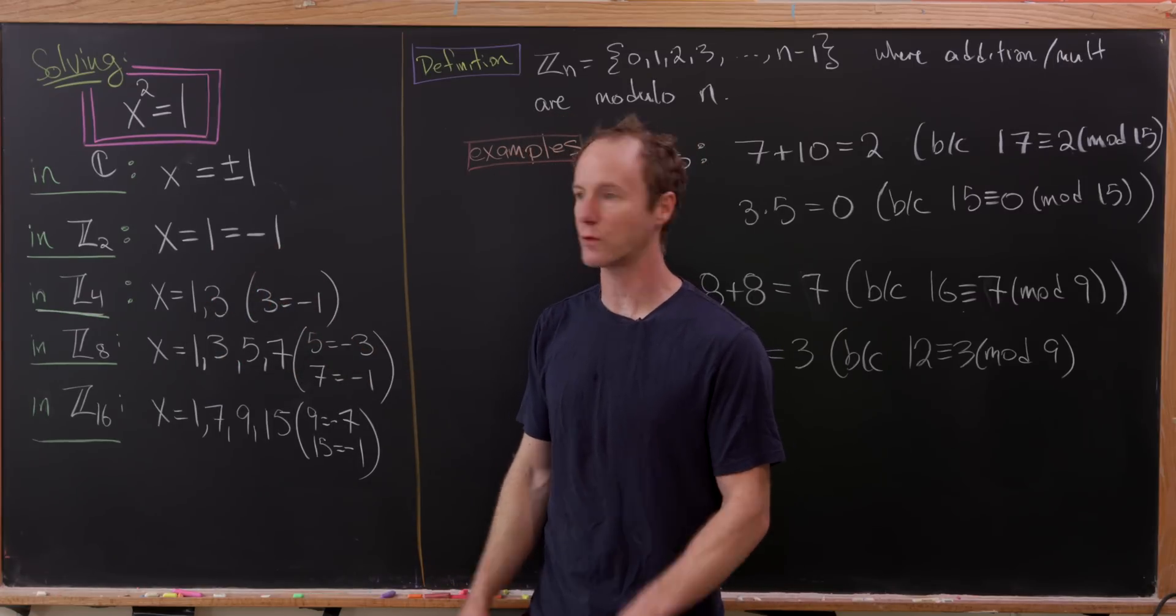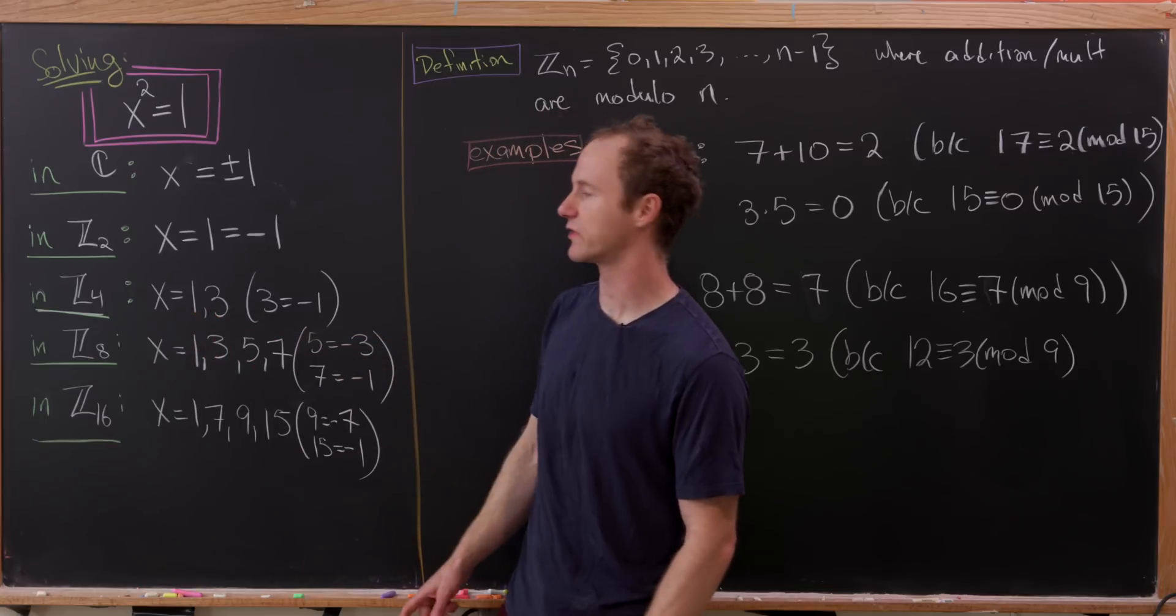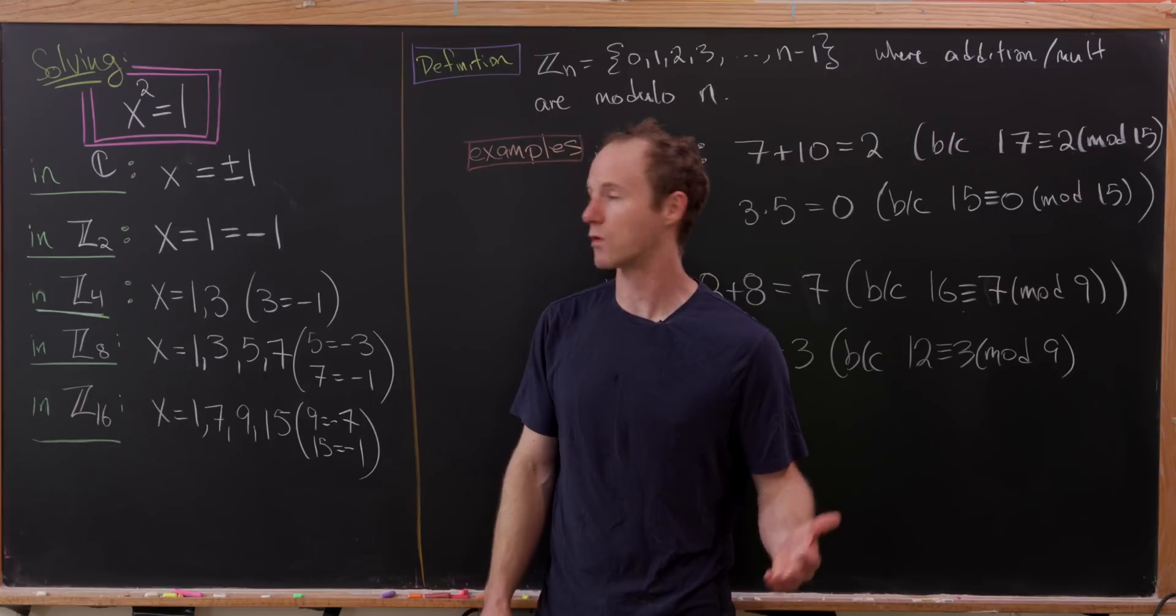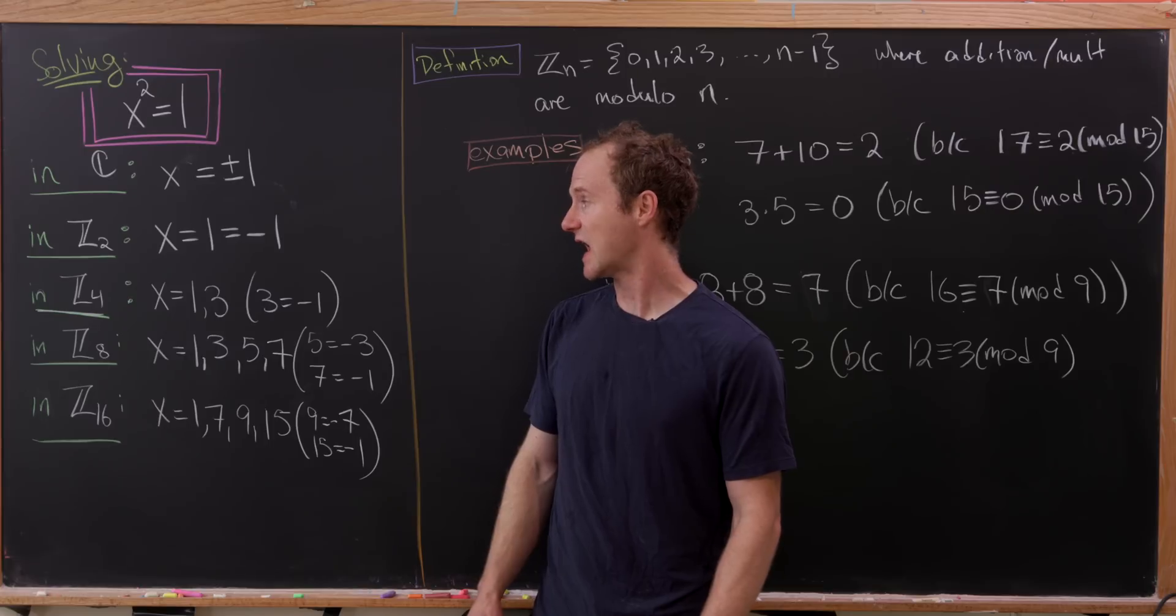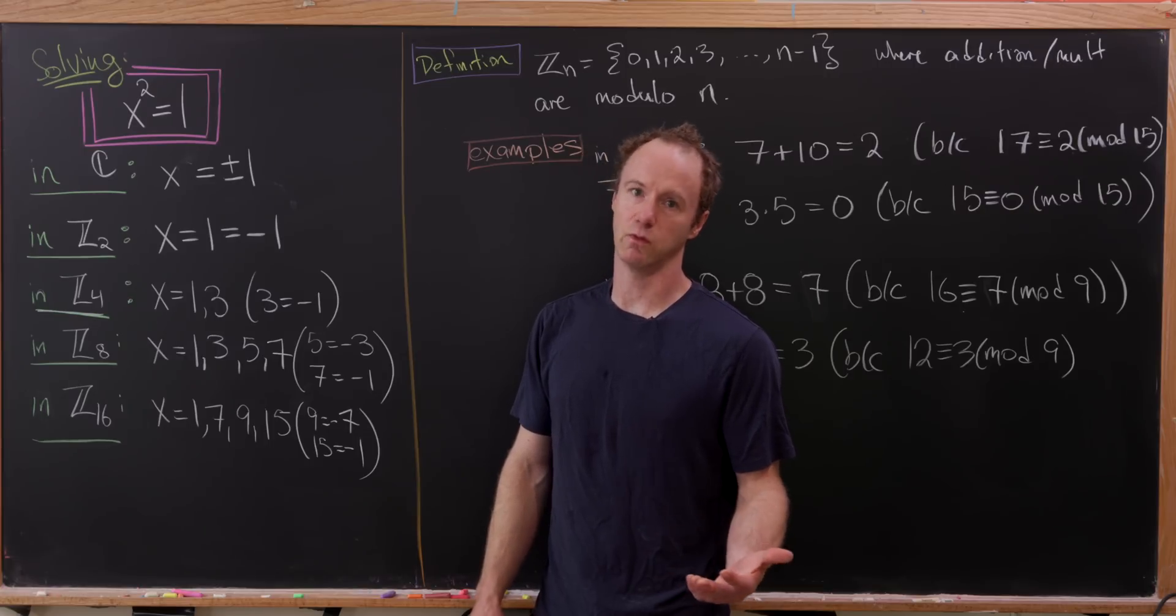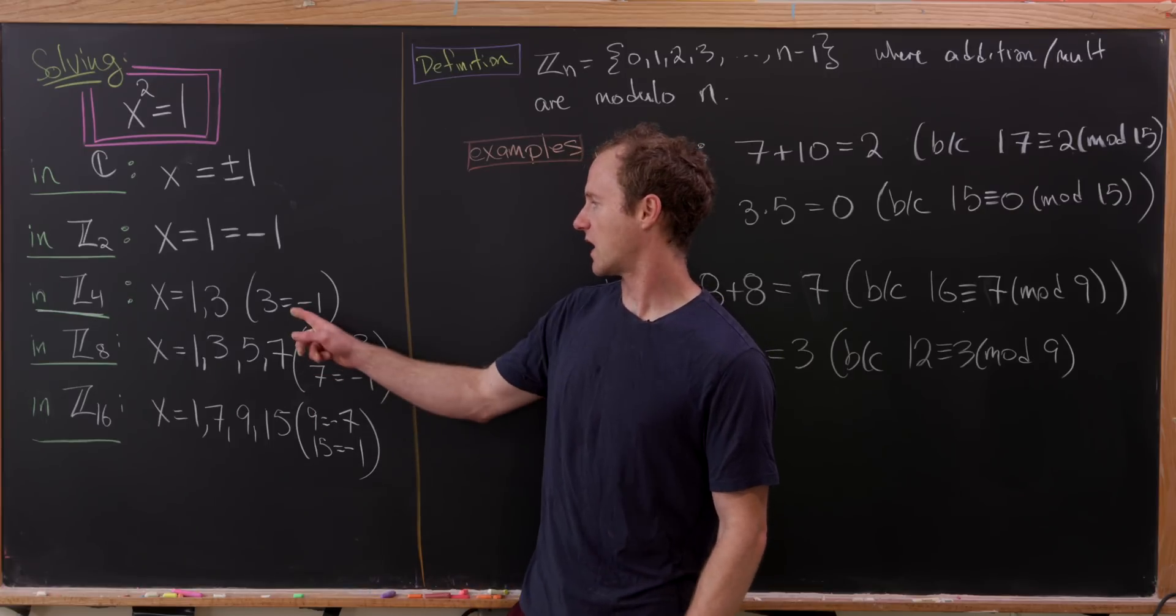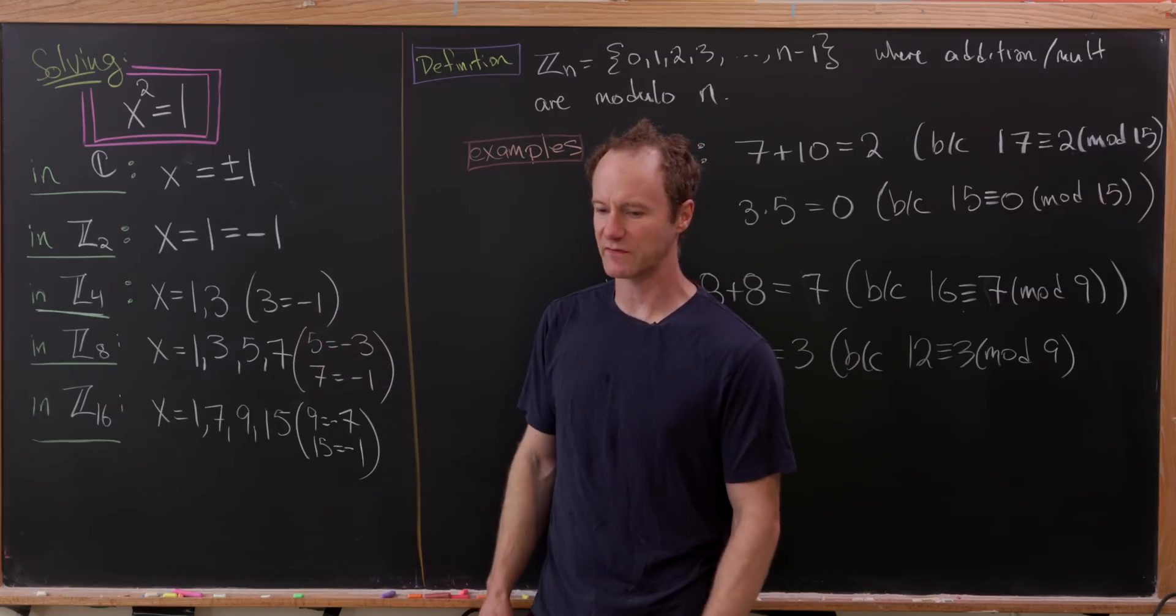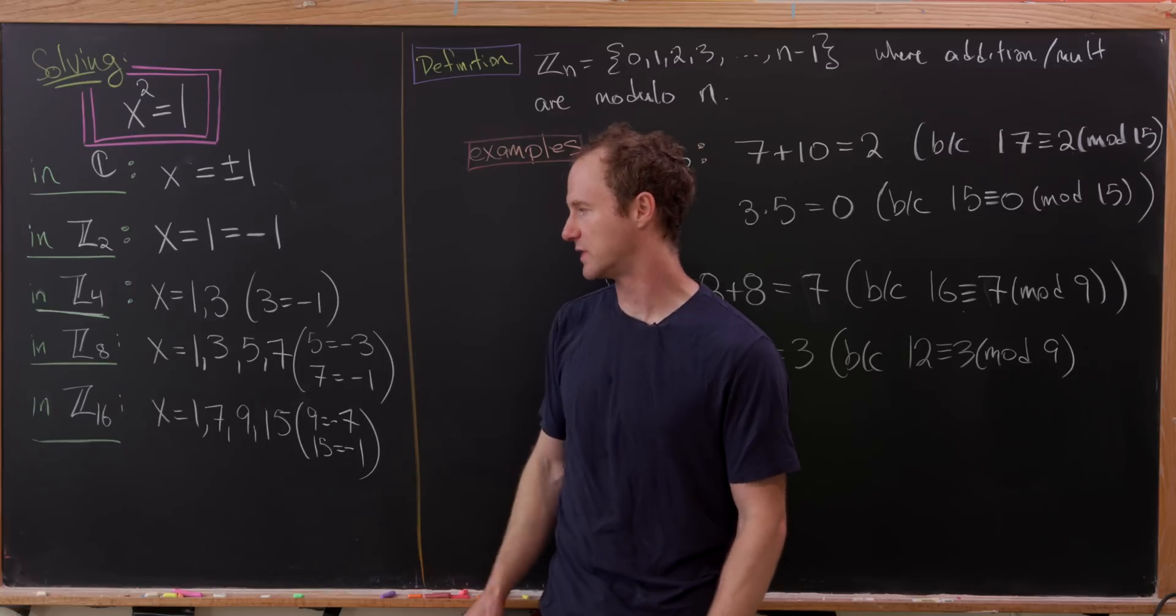In ℤ₄, we have solutions 1 and 3. Observe that 3 is equal to, or 3² is equal to 9, which is 1 more than, let's see, 8. So that makes that 1 mod 4. And, well, let's observe that 3 is the same thing as -1. So we can think of that as pretty similar to what we had up here.